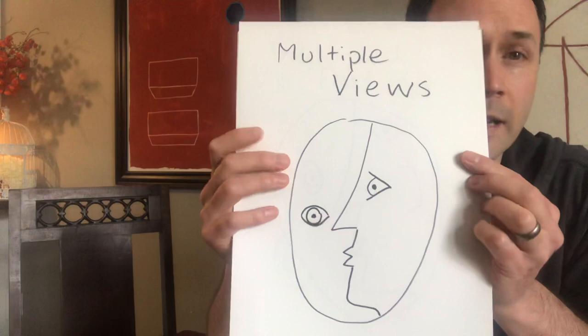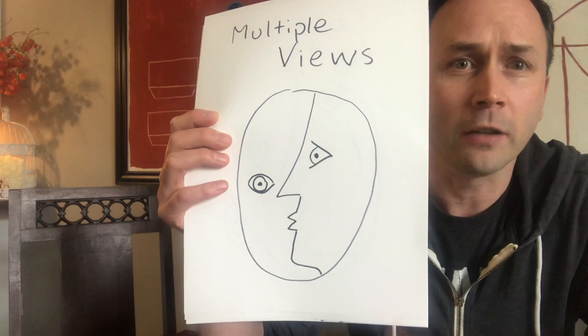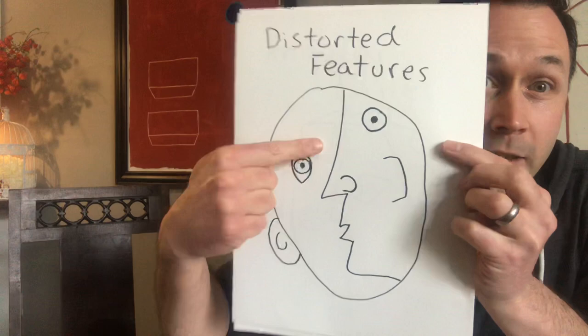Another thing that cubism artists like to do is have multiple views in their artwork. They like to have it look like it's a front view, side view, maybe they like to put the back view in there somehow. So here's a simple trick you can do to show the side of the face, the front view of the face — profile, front view.